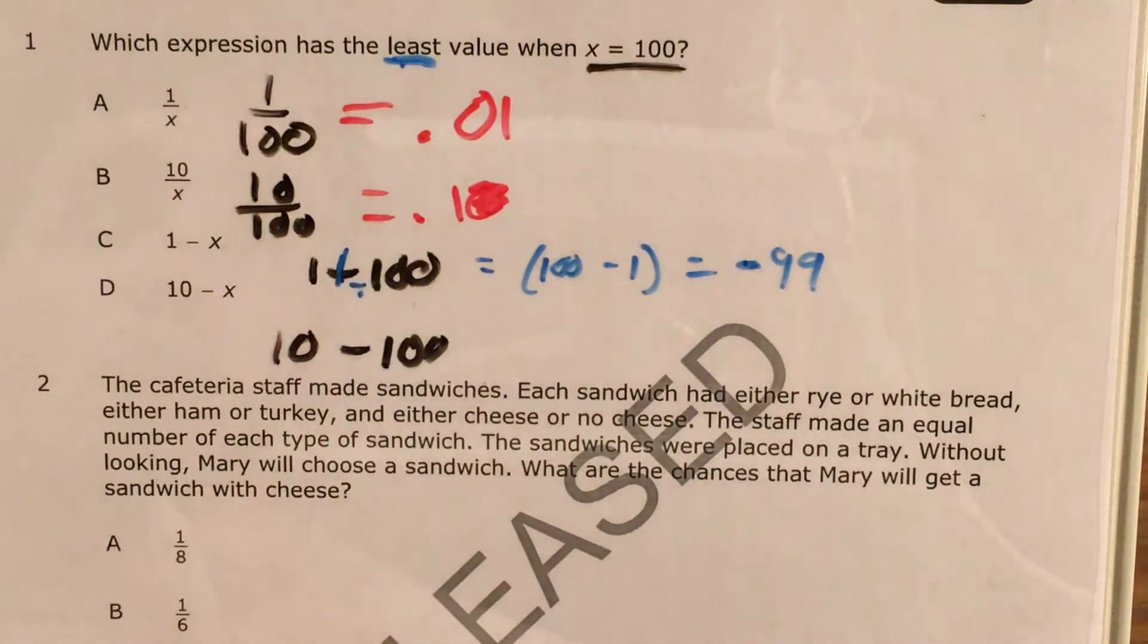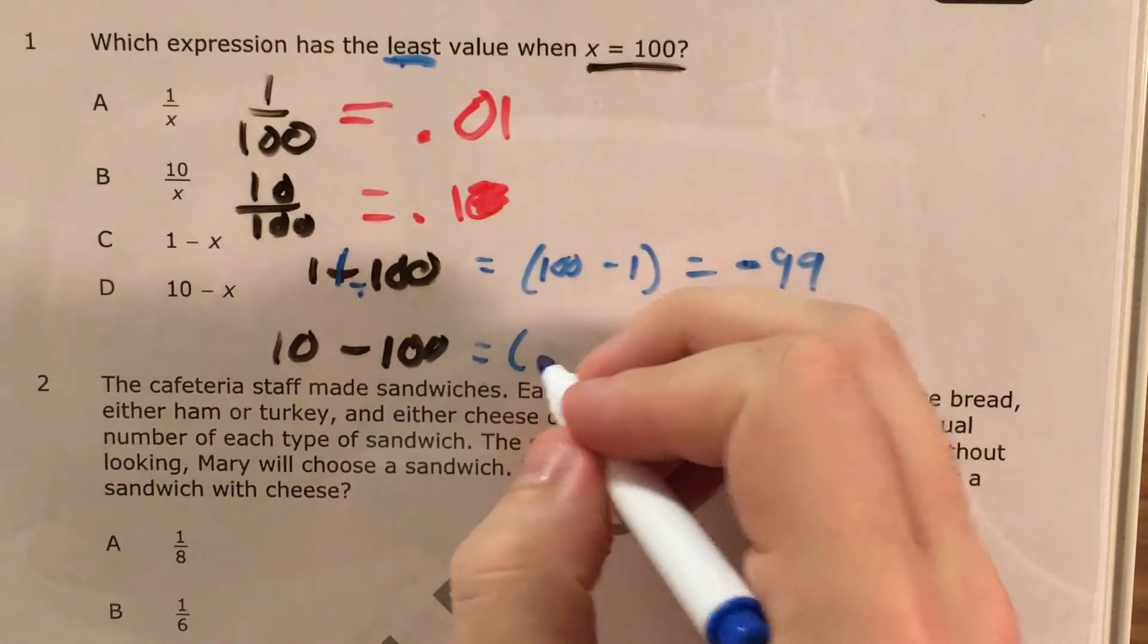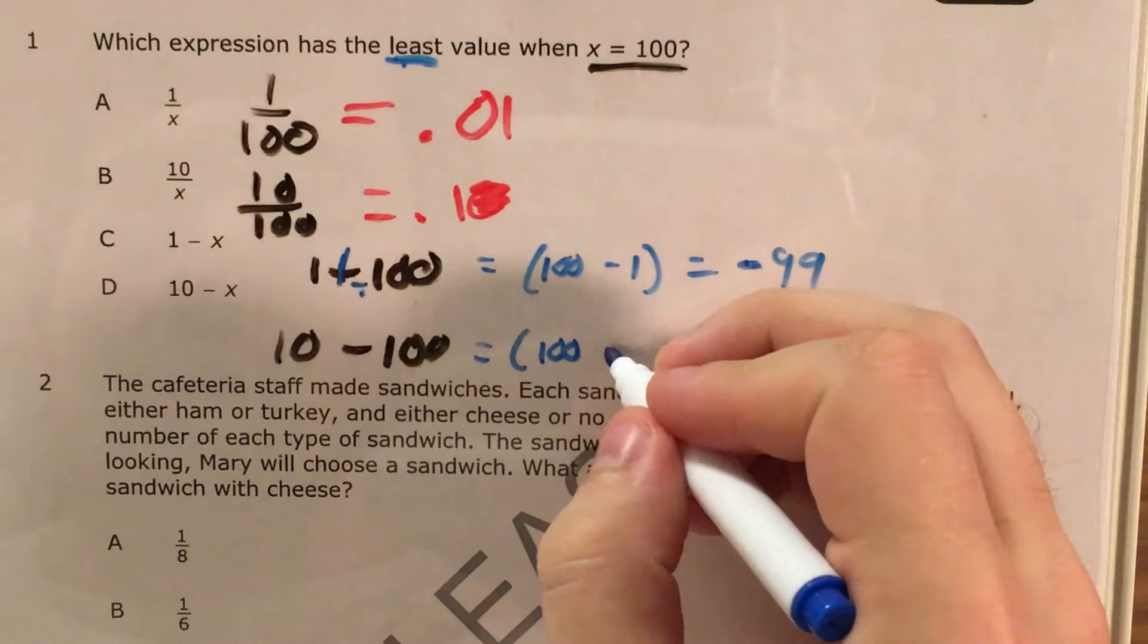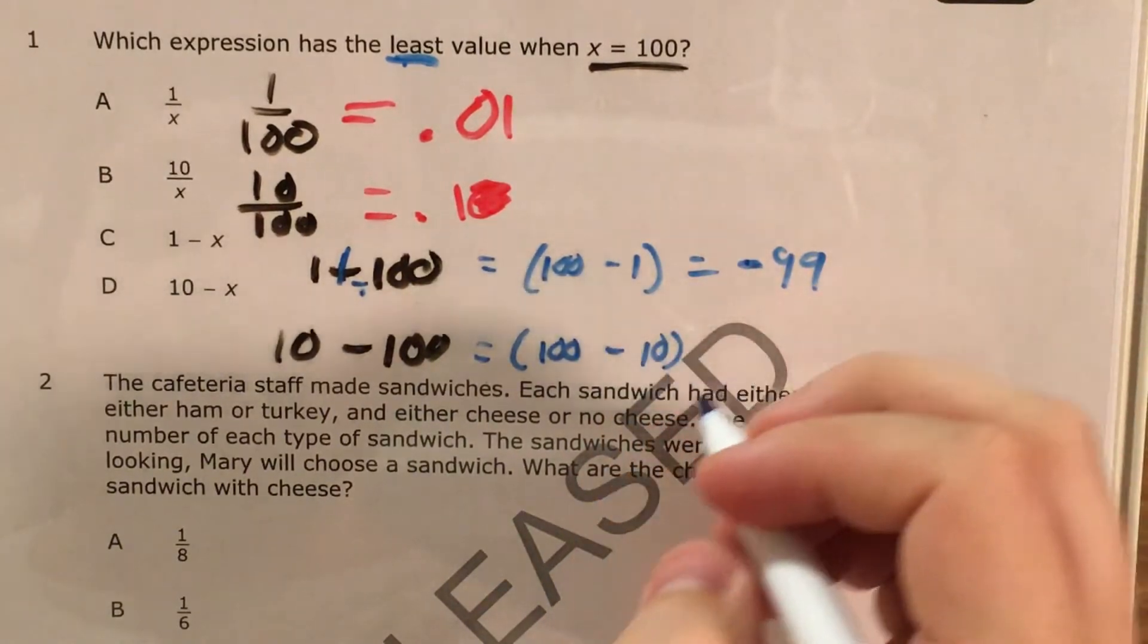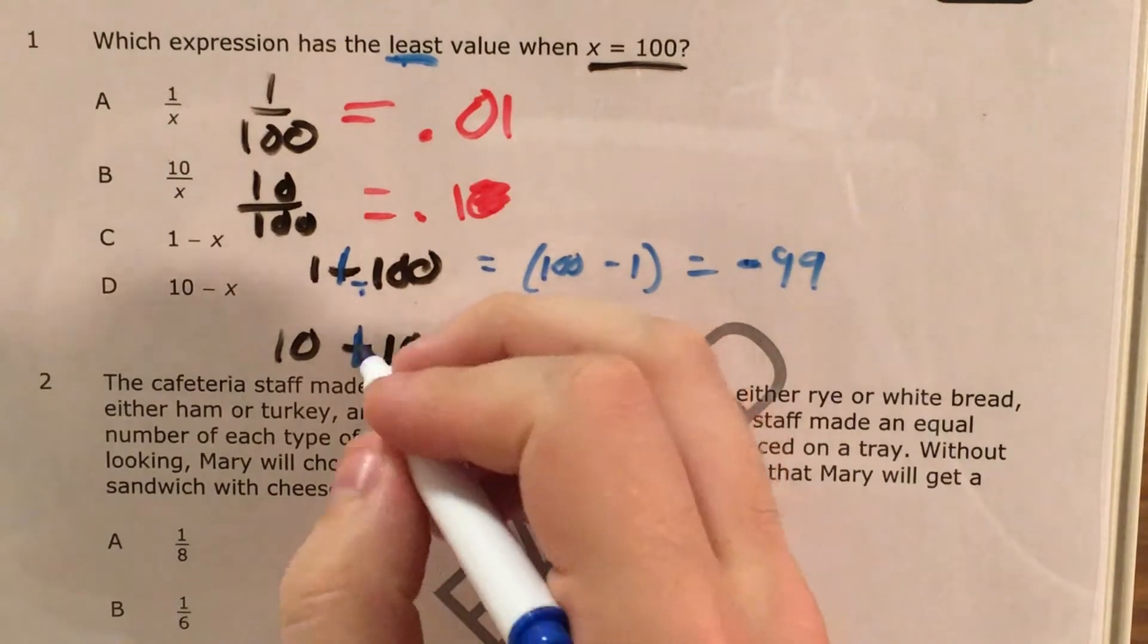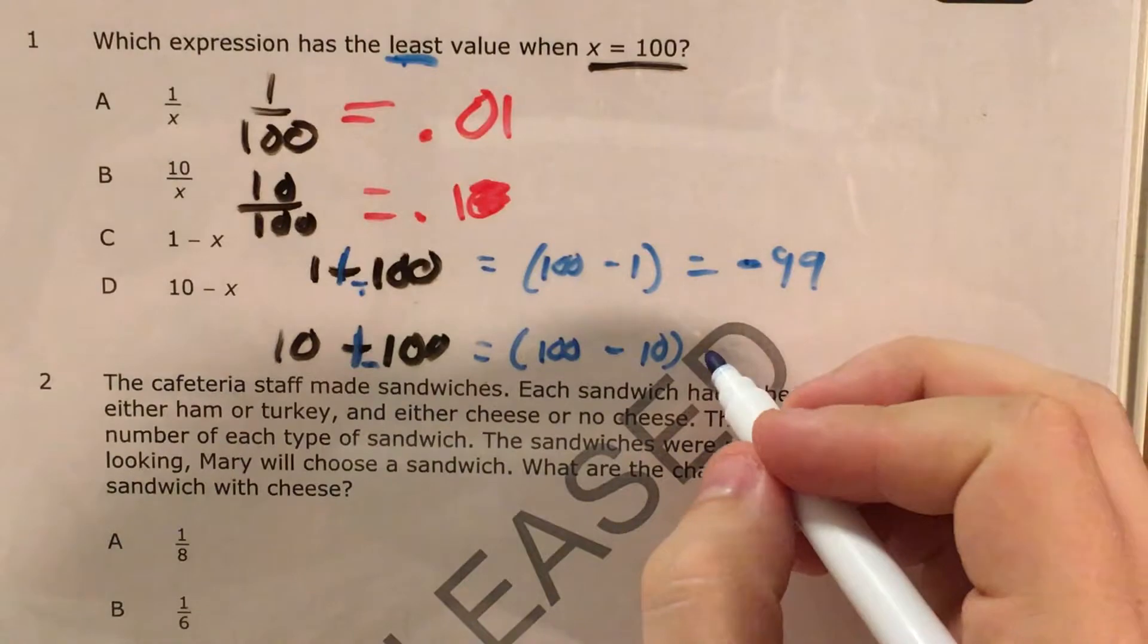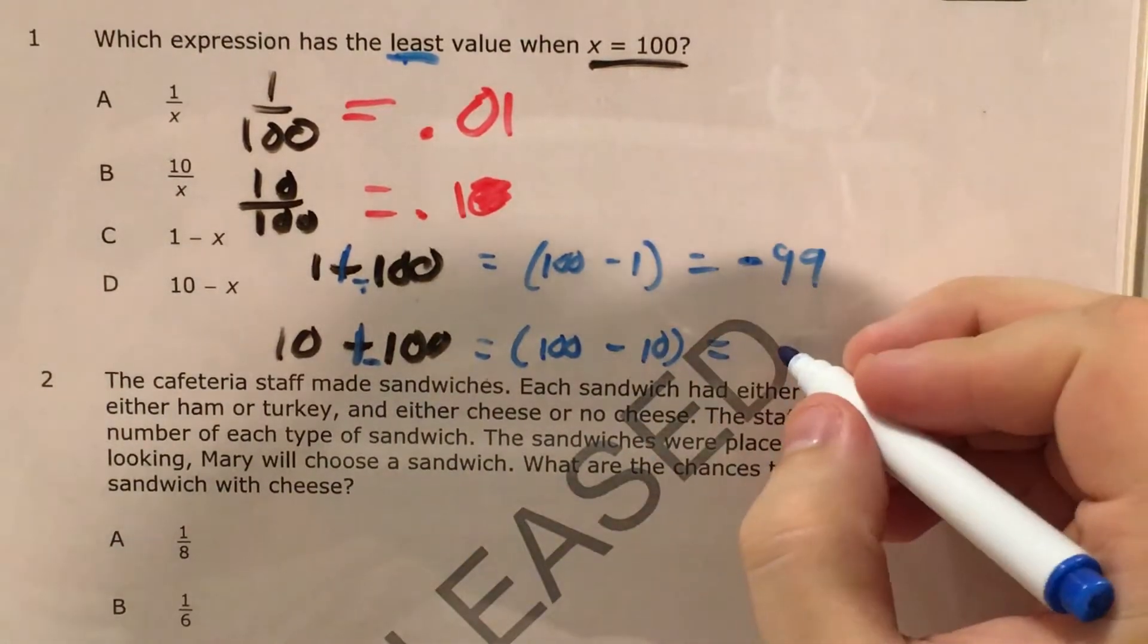In a similar way, if I look at 10 minus 100, I'm going to start by saying that's the same thing as 100 minus 10, and I just look for my negative sign. Actually, let me make that plus negative 100. Should have done that first. You always want to do that first because you never want to subtract when you deal with integers, you always want to add. So now 100 minus 10 is 90.